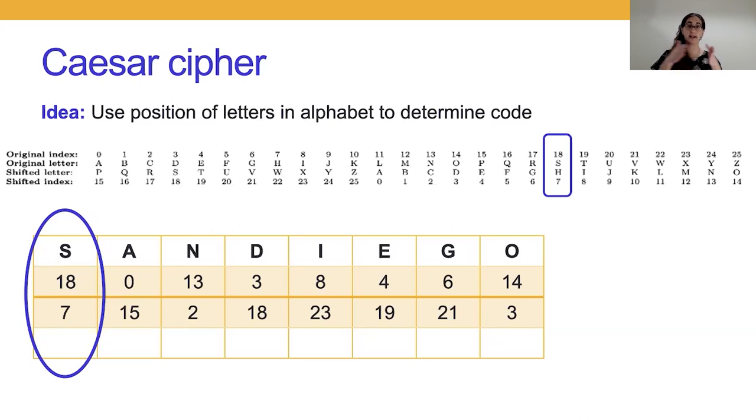The idea is to use the position of the letters in the alphabet to determine the shifted letter. So if we think about laying out all of the alphabet in alphabetical order, we can give each letter in the alphabet an index. A gets index 0, B gets index 1, all the way through to S, that first letter in my message, which has index 18. Then what we'd like to do is shift over the index by 15, that's the shift we agreed on, and calculate the index of the new letter. So now we have to think about a mathematical way of expressing that 18 should go to 7, 0 to 15, 13 to 2.